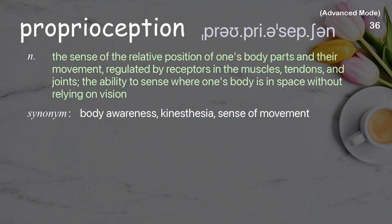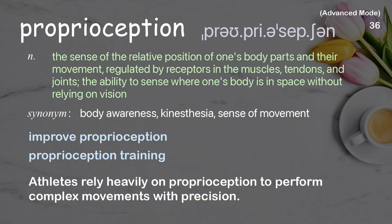Proprioception: the sense of the relative position of one's body parts and their movement, regulated by receptors in the muscles, tendons, and joints; the ability to sense where one's body is in space without relying on vision. Examples: improve proprioception; proprioception training. Athletes rely heavily on proprioception to perform complex movements with precision.